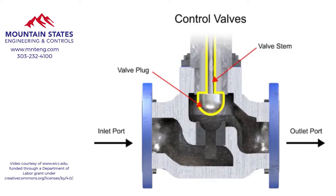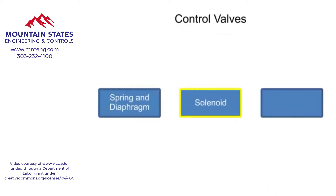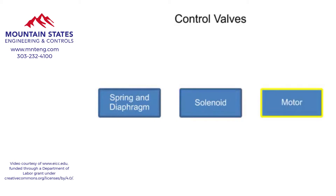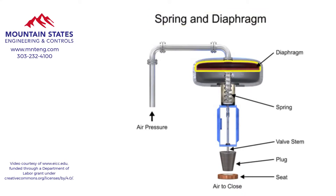Three actuator types are used in control valves and they include spring and diaphragm, solenoid, and motor. The spring and diaphragm actuator uses a spring and a diaphragm to move the valve stem and plug.